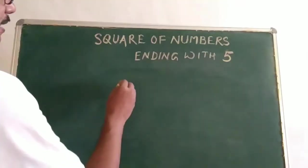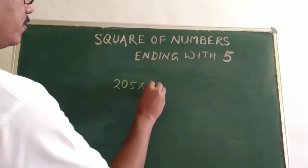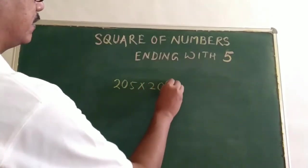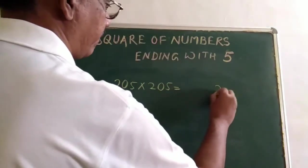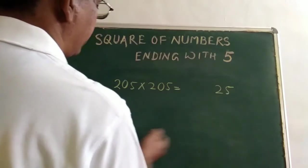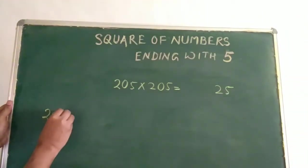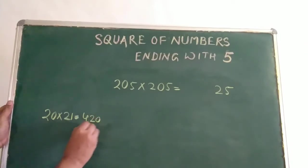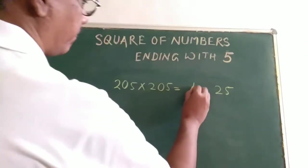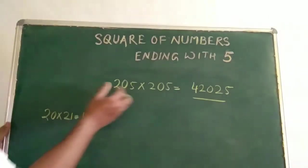I will take another example: 205. We have to find out the square of 205. We apply the same method. The first number is 5, so the square of 5 is 25. Now what is remaining? 20. So 20 will be multiplied by the next number, that is 21. 20 times 21 is 420. So we write 420 here. That is the answer: the square of 205 is 42,025.